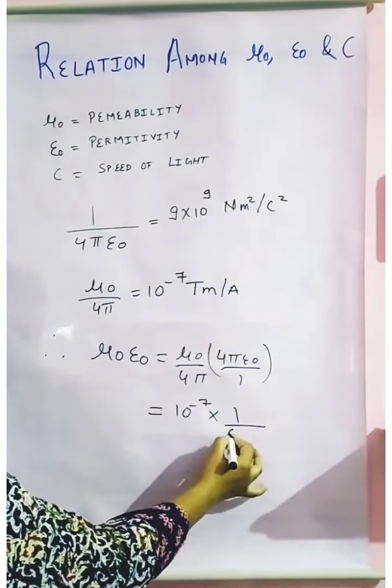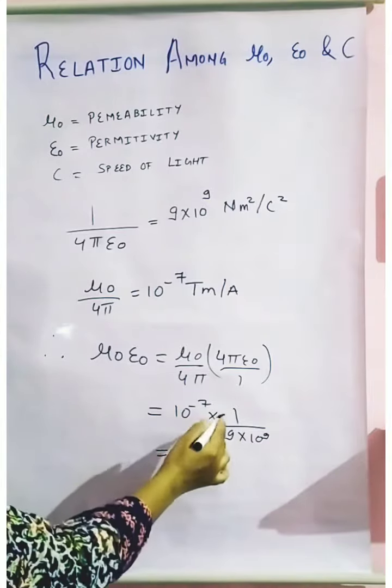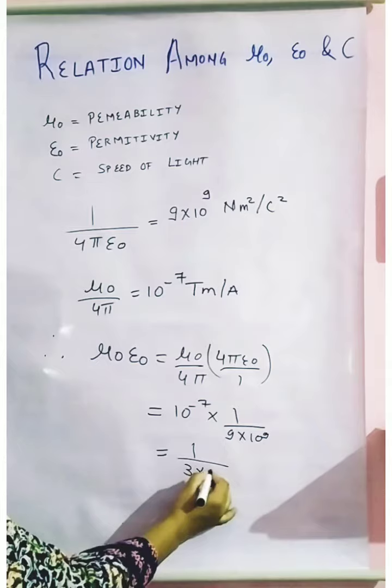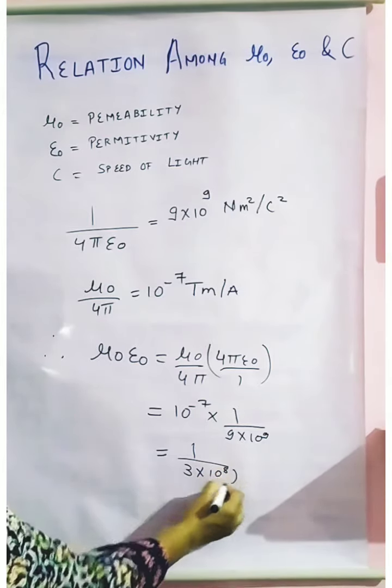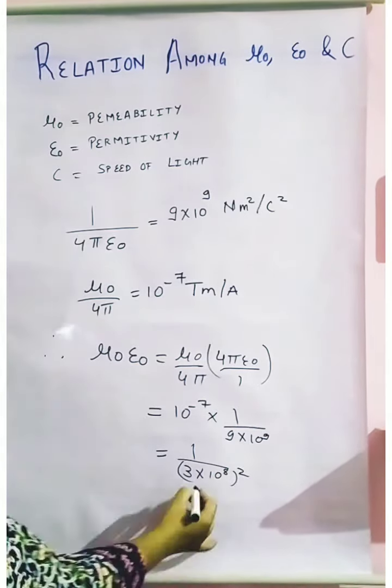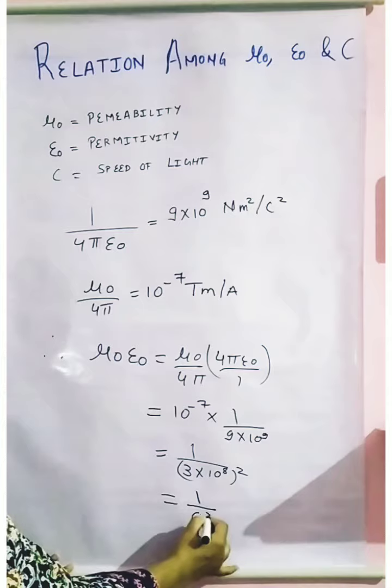When you are going to solve this particular, you are going to get this comes out to be 3×10⁸ whole to the power 2. After solving this, if you will see, this is nothing but the speed of light. So I will get this as 1 upon c square.